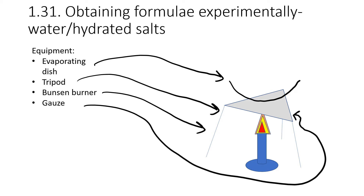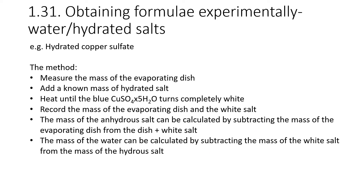This method is similar to the previous one but not quite the same. Instead of a crucible we use an evaporating dish, and we put our hydrated salt in there. We heat it up. Similarly to before, we first measure the mass of the evaporating dish, then add a known mass of hydrated salt — measure its mass on a balance and place it in the dish.